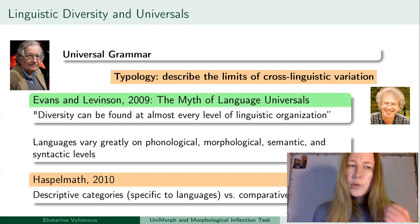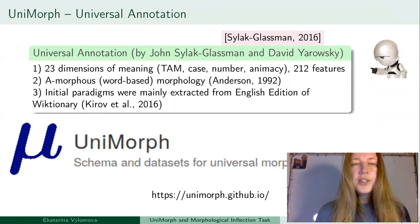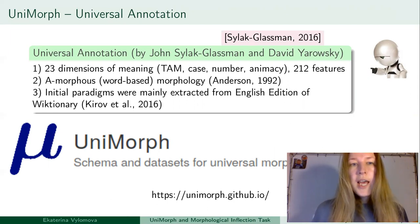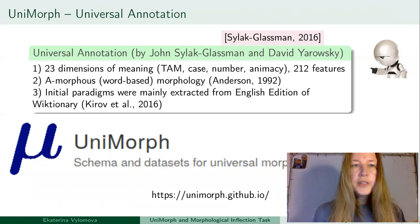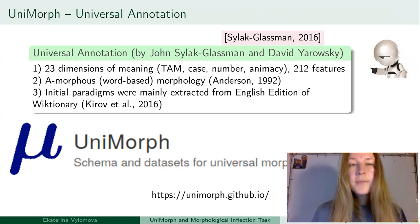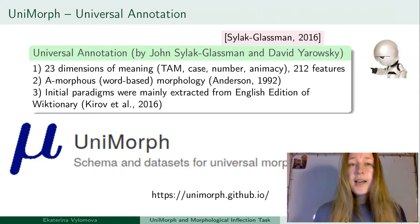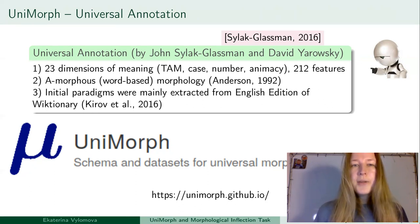This idea was the basis for the Unimorph annotation schema. Unimorph provides a universal annotation for morphosyntactic features of languages, and the morphosyntactic features in Unimorph occupy a middle position between those descriptive categories and comparative concepts. Unimorph was introduced by John C. Sylak-Glassman and David Yarowsky in 2016. At roughly that time, John sat in the library and surveyed the typological literature to identify dimensions of meaning — such as tense, aspect, mood, grammatical case, number, and animacy — that might be universal.